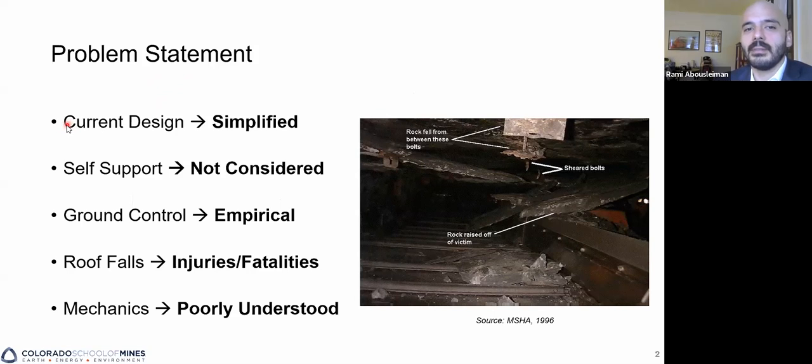Furthermore, self-supporting capacity of these materials is not considered and the ground control, so the bolts, the steel sets, the wire mesh, the shotcrete, the amount of those that are installed is largely based on empirical case studies of what has worked and what has not worked in the past. And regardless of the conservatism used when implementing these methods, roof falls continue to injure and kill those working in the underground, particularly in underground bituminous coal in the US and worldwide.